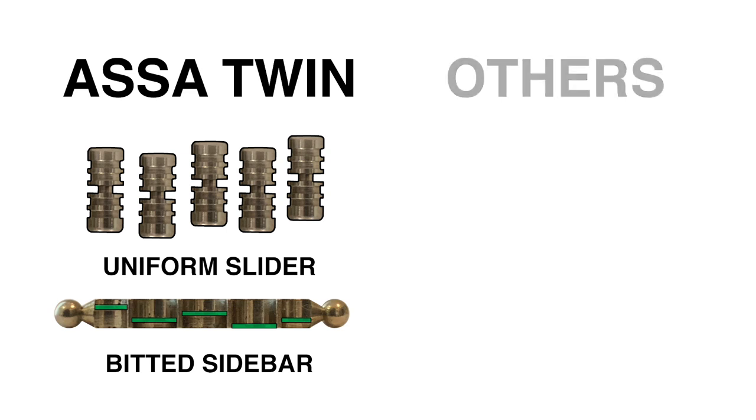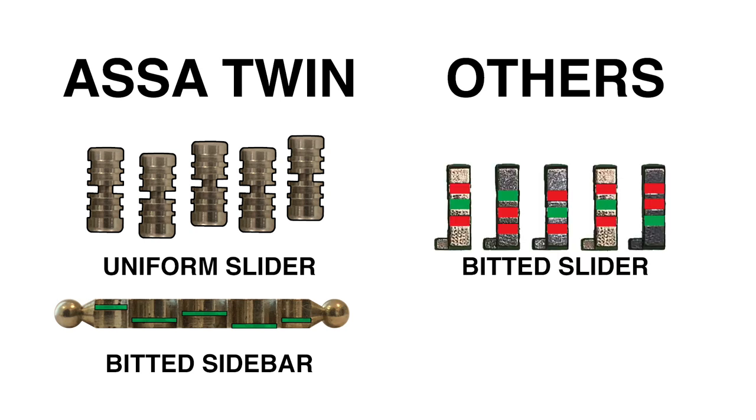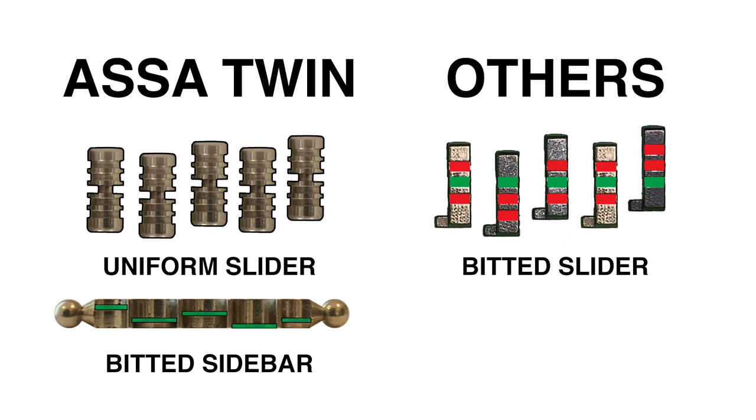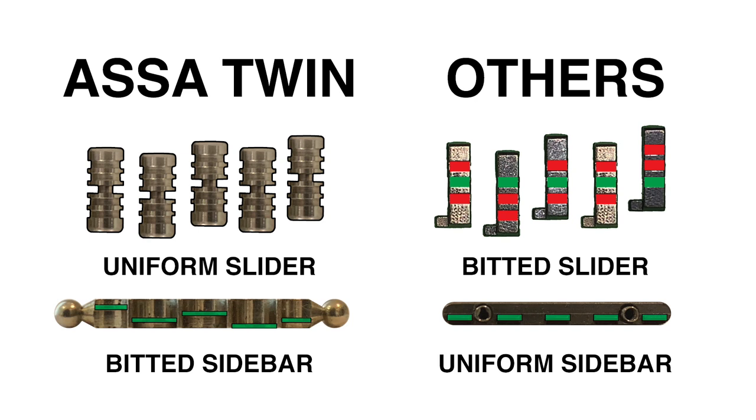In every other sidebar lock, the sliders are different and therefore have the bidding. The key lifts the true gates of the sliders into alignment and the sidebar is just a horizontal bar.